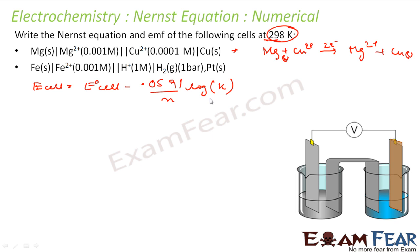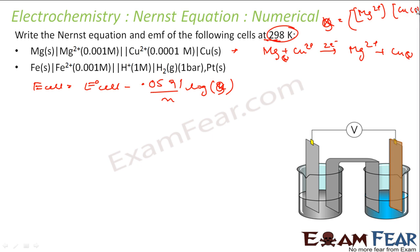For this equation, E cell equals E-naught cell minus (0.0591/N) × log Q. Q here is the concentration of Mg²⁺ divided by the concentration of Cu²⁺. Solid concentrations are taken as 1, so Q simplifies to [Mg²⁺] / [Cu²⁺]. That is my Q value.